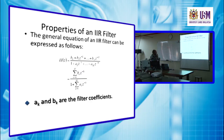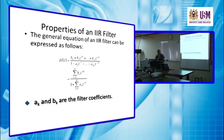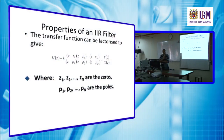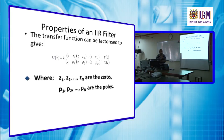Here ak and bk are the filter coefficients. Choosing the filter coefficients determines the choice of the transfer function, which also determines how this filter acts — whether it is low-pass, high-pass, or any other type of filter. The transfer function can be factorized to give H(z) equal to k, where k is called the sensitivity and gain, times (z minus z1).